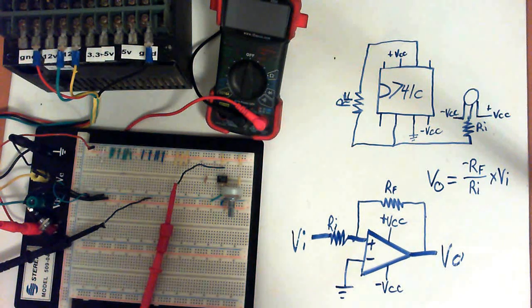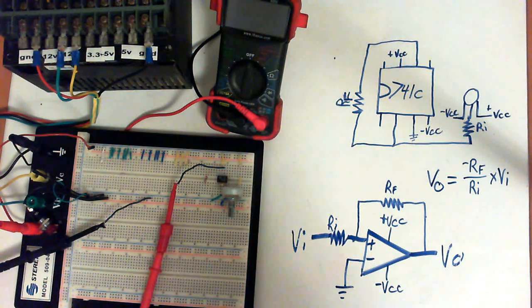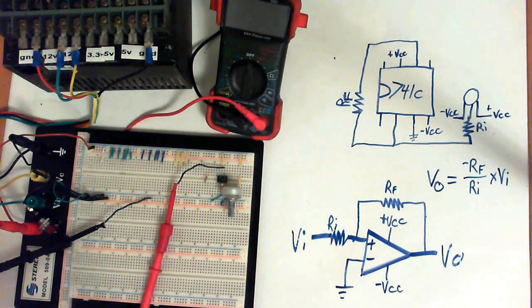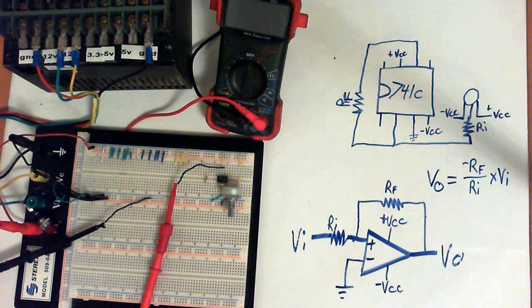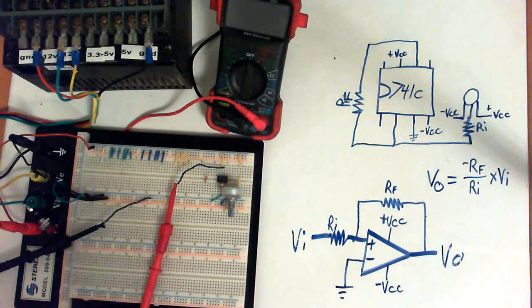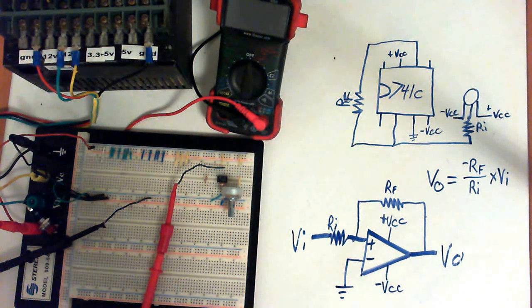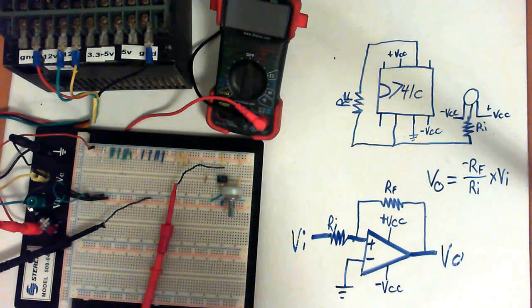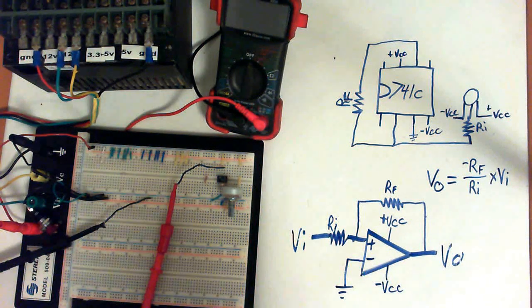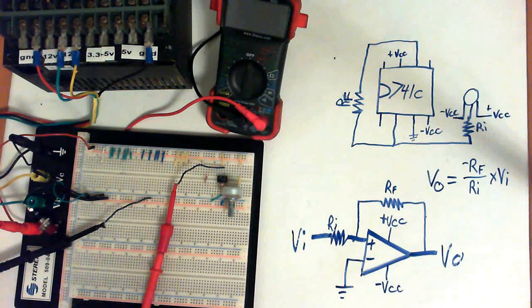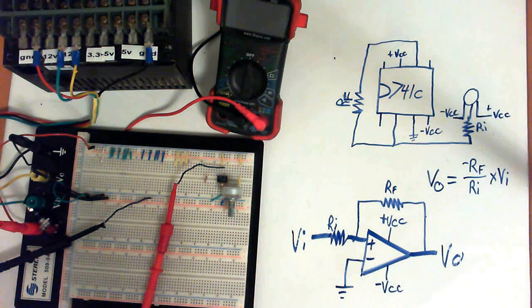The only four things we're going to need today is a 741CN op amp. You can use other ones. There are many other options, but I'm sticking to the 741CN. It's an older version. Some of the new ones are better timing and faster switching, but for what we're doing today, it doesn't matter how fast it switches. The next part you're going to need is a 2K resistor, preferably a 1%, but a 10% tolerance works just fine.